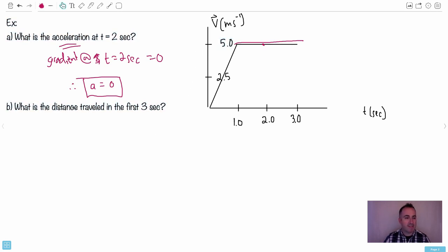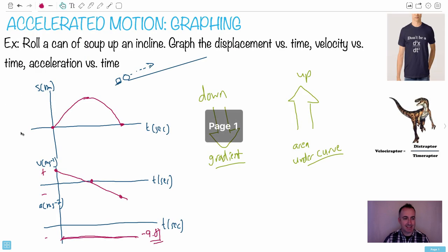So I want to find the distance traveled. And again, I'm given a velocity graph. So think about it. I want the distance traveled from velocity. Think about it. Distance is up. That's a displacement, right? Displacement is a measure of distance. So if I want the distance traveled, I go up. Therefore I have to take the area under the curve.